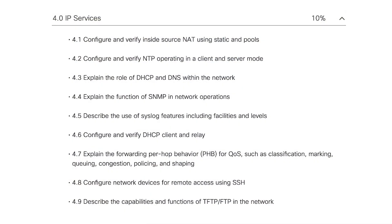Imagine you're doing the CCNA exam and you come to one of these lablets — a simulated lab environment — and the task is simply to log into an R1 router and enable SSH for remote access. So you need to practice that using tools like Packet Tracer or CML, so you can get your hands dirty. If you're lucky and have access to hardware, fantastic. But there are loads of simulated environments including Cisco U Labs where you could practice all of those.